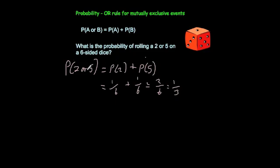Another way to do it: some people just say a 2 or a 5 would be 2 out of the 6 sides. That's quite straightforward for a dice question. However, for a more complicated question you may want to use the formula — the probability of A plus the probability of B — so the probability of a 2 is 1 sixth plus the probability of a 5 is 1 sixth, giving 2 sixths.